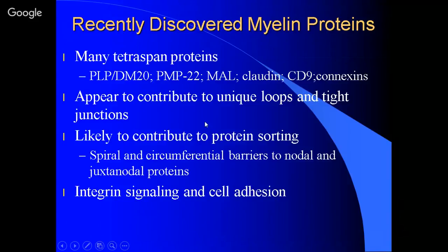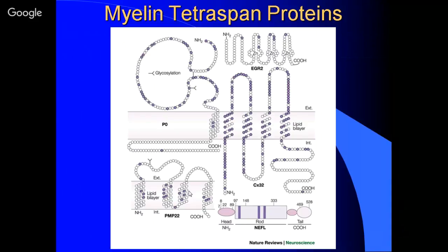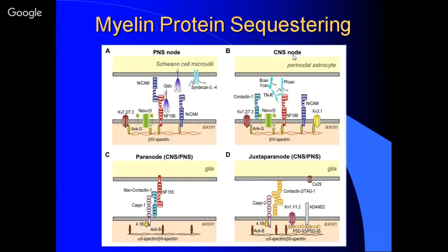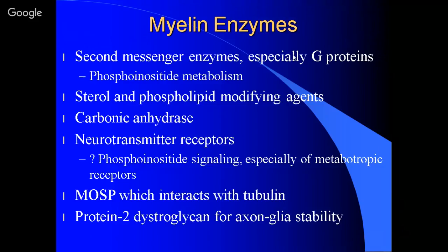Don't think of this in simplistic terms. The presence of all these proteins tells you there's a lot more going on. One recently discovered myelin tetraspan protein is CX32. Here's the bilayer, intracellular and extracellular, glycosylated, interacting with another protein. These are complex structures — not synapses, but complex and active. They have enzymes too. G proteins are very prominent here, and one of the phospholipids is phosphoinositide, which is usually present in the lipid bilayer.